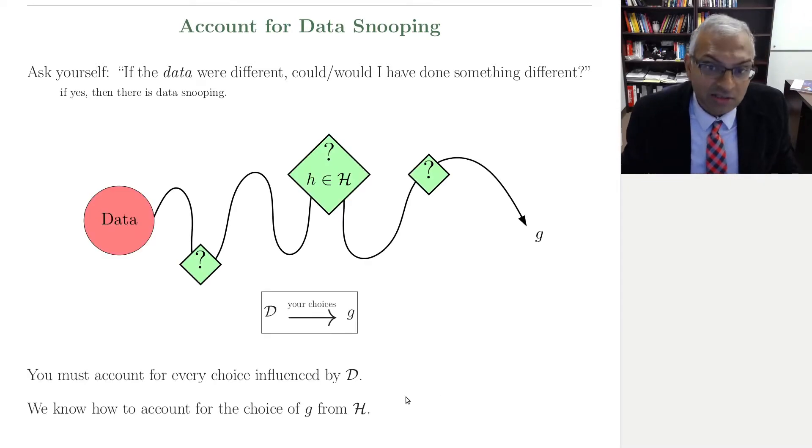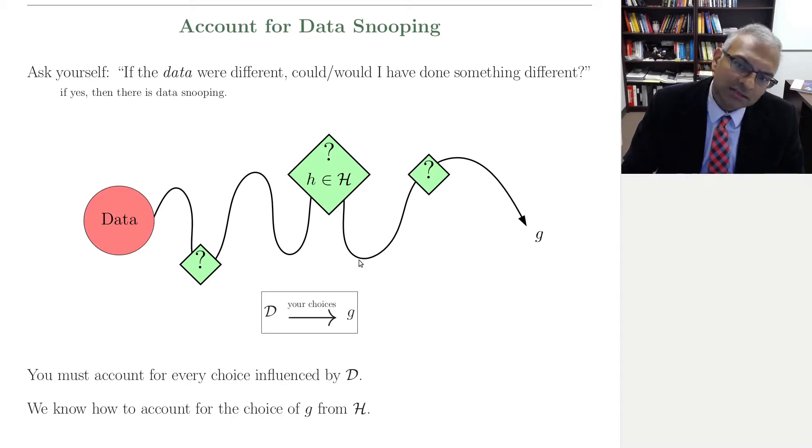So here's the picture that goes along with that. You start with data. And there's some workflow you take until you get to the final hypothesis. And during this workflow, I put in these green boxes, choices that you might make. Choice one based on the data, choice two based on the data, choice three based on the data, and so on. At a high level, you have your data set, and then you make choices, and that leads to your final hypothesis G.